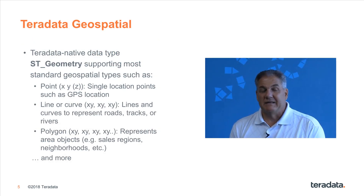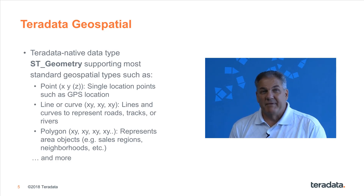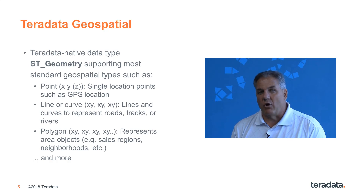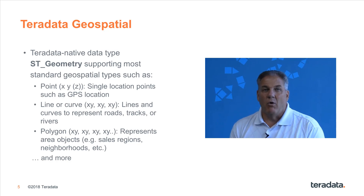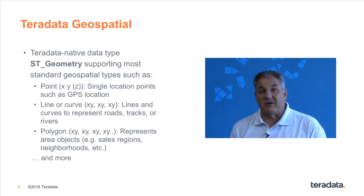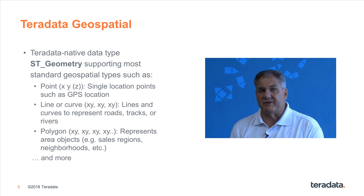First, geospatial. Teradata has had geospatial for quite some time, going back to 13.10, or even prior to that with UDS. This is the ability, using the geometry functions, to either set a point — a place on the map — a line or an arc to designate a river, a road, some path, an aisle in your store, or a shape. This could be a two-dimensional shape such as an area around a city, or a three-dimensional object like a sphere covering a downtown to understand heights and depth. All of these are enabled inside of Teradata.